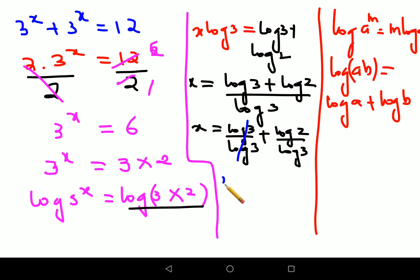Now what happens here is this cancels, so I'll get the value of x as 1 plus log 2 upon log 3. And if they have provided you the values, then you can write this as equals to 1 plus 0.301 upon 0.477.